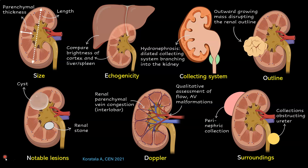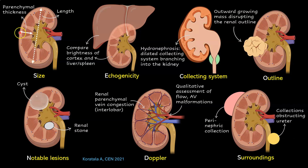To systematically assess common abnormalities on kidney ultrasound and not miss any major lesions, we use a checklist called SECONDS — S-E-C-O-N-D-S. The initial S stands for size of the kidney. We look at two parameters: length of the kidney side to side, and parenchymal thickness, which is from the outside of the kidney to the tip of the medullary pyramid. Length in most adults is approximately 10 to 12 centimeters, and parenchymal thickness ranges from 1.5 to 2 centimeters. In most chronic kidney disease, the size of the kidney reduces, except in infiltrative diseases and diabetic nephropathy.